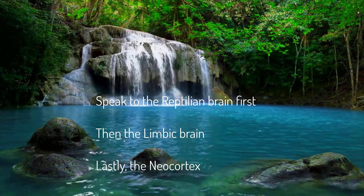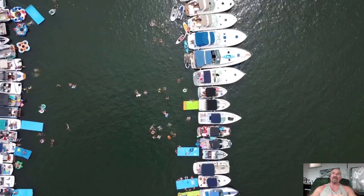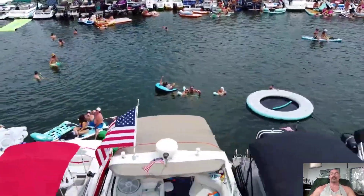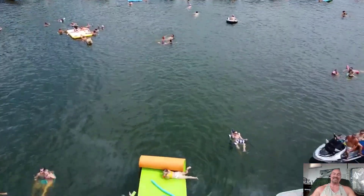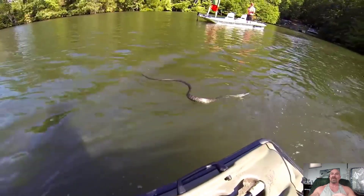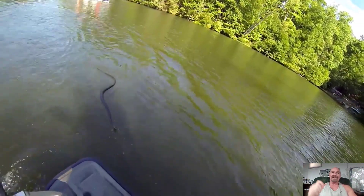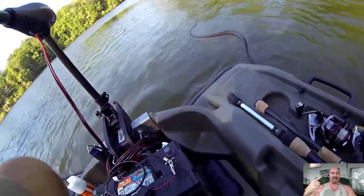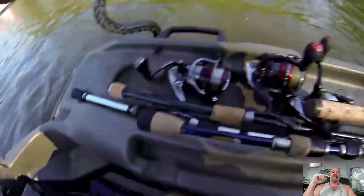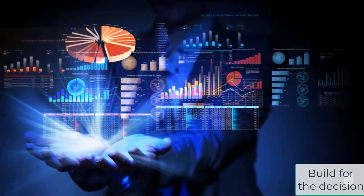The reptilian brain can make survival decisions before you or the other brains can even begin to process the data. I know this firsthand: we were out at the lake, I was floating on a raft talking with friends and family, and I felt something brush my leg. Before I could look, I had reached down, grabbed, and thrown a four-foot water snake at least 30 feet across the water. Chaos ensued as we tried to get everyone out of the water — but I literally grabbed and threw a snake before my neocortex could even register it. That's the reptilian brain, and that's what we try to speak to in our marketing.